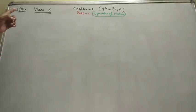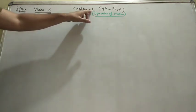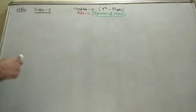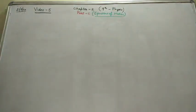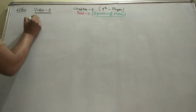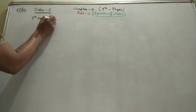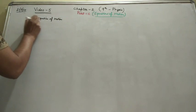Hello students, this is video number five, chapter two of ninth standard physics part C: equations of motion. First, we'll try to find the first equation of motion. There are three equations of motion.